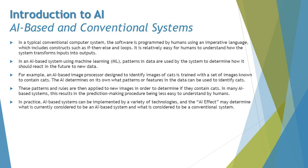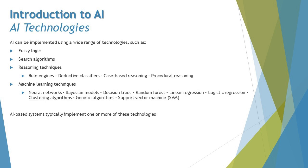In practice, AI-based systems can be implemented using a variety of technologies, and the AI effect — which we learned about in our previous tutorial — may determine what is currently considered an AI-based system versus a conventional system. To quickly recall, the AI effect refers to the changing perception of what constitutes AI, specifically how the outcome of AI is considered as its capabilities evolve.